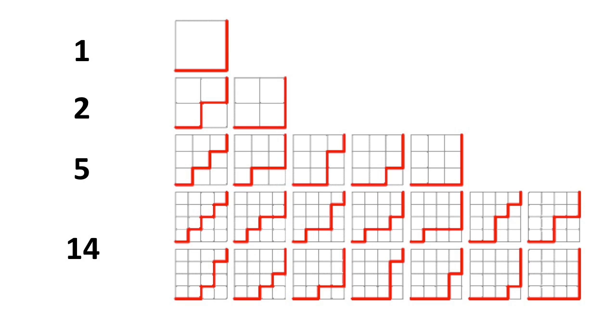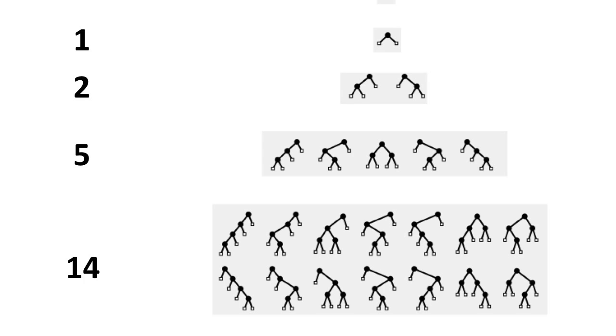and finish in the upper right corner. The Catalan numbers also count the number of rooted binary trees with n internal nodes where each node has zero or two children.